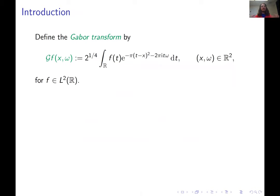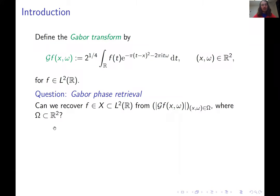As I said in the title, we're looking at Gabor phase retrieval, and Gabor phase retrieval involves the Gabor transform. The Gabor transform — you can see it here on the slide — is a linear transform. Once we have this definition, we can define Gabor phase retrieval as the problem of recovering a signal in a certain signal class X, which is a subset of the square integrable signals. The problem is recovering the signal from the magnitude of its Gabor transform on some subset omega of the time frequency plane.